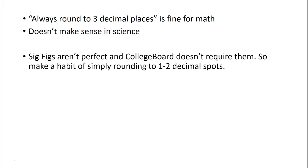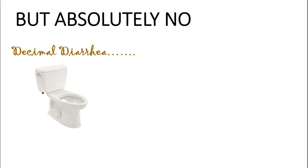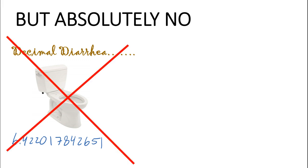Let's just make it simple — round to one or two decimal places. Either of those answers is fine. The only thing you should never do is decimal diarrhea: just going on and on copying all the decimals that pop up on your calculator. That's the worst you can do. There's no science equipment available in a high school science class that will give you that level of accuracy. If you're blindly copying what's on your calculator, it makes us think you don't understand what's actually happening. Just round to one or two. Thanks for watching.